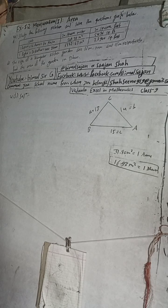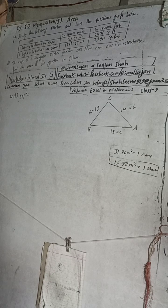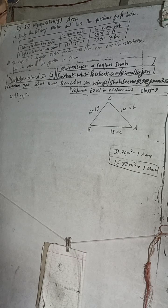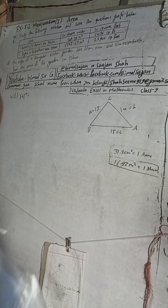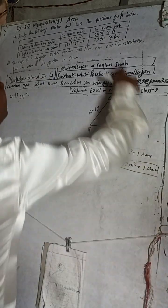Hi class 9 and 10 students, welcome back to Bimbal Sarji YouTube channel. This is question number 4D, exercise 5.2, Mensuration, first part: Area. Vedanth Excel in Mathematics, class 9. The question is: study the following relation and solve.